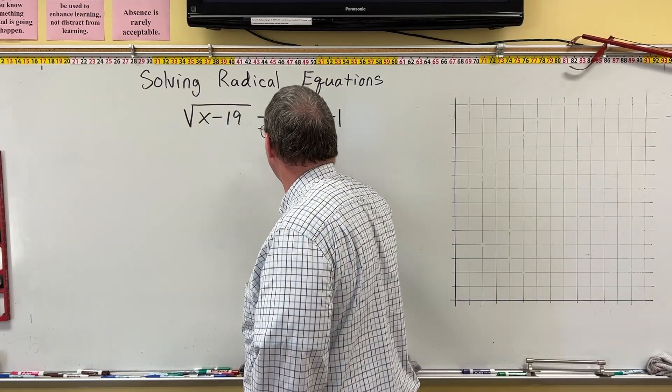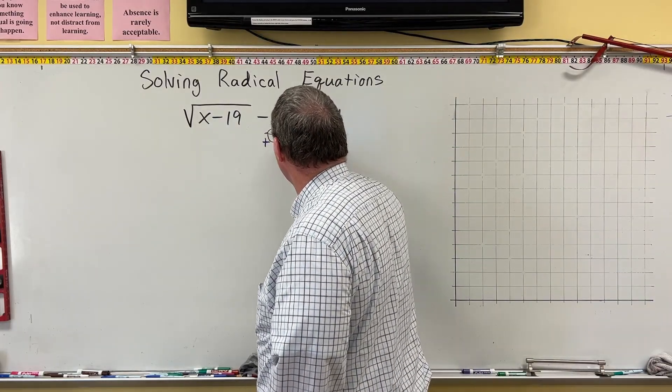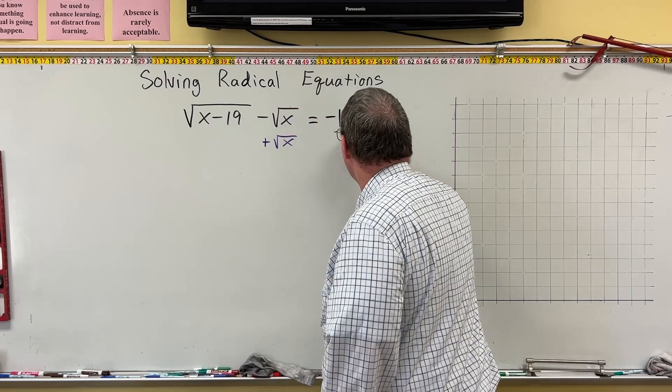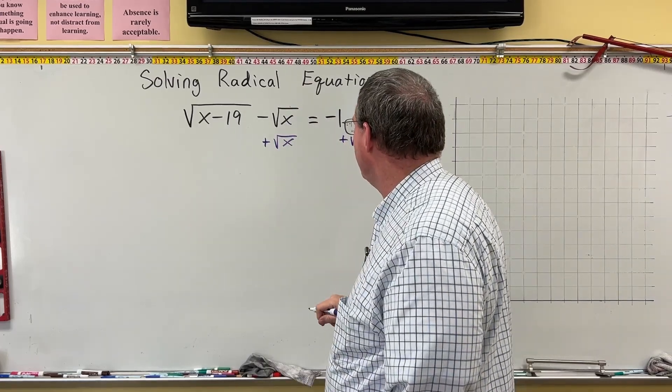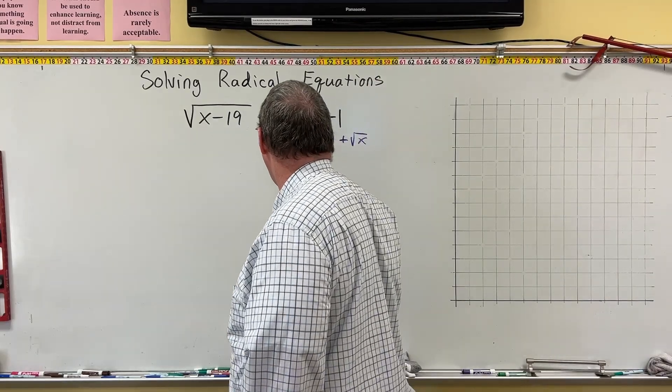What we're going to do here to make it a little bit easier is we're going to add the square root of x to both sides. And when I add the square root of x to both sides, it's actually going to make the solution a little simpler. And you'll see why that happens.